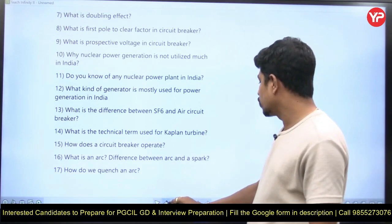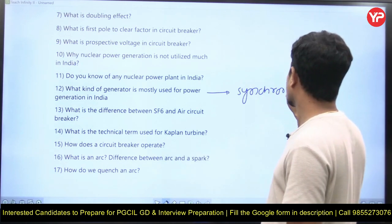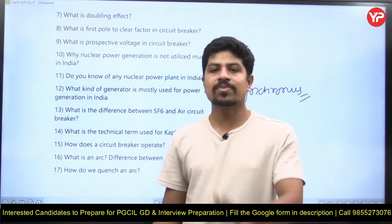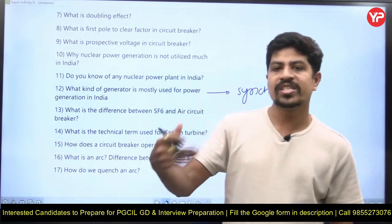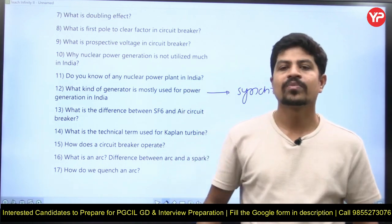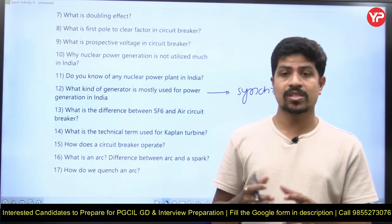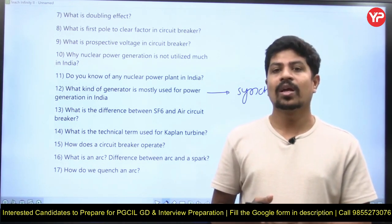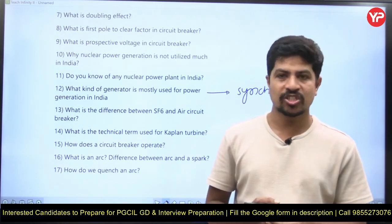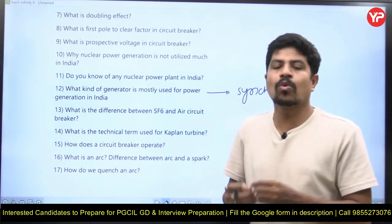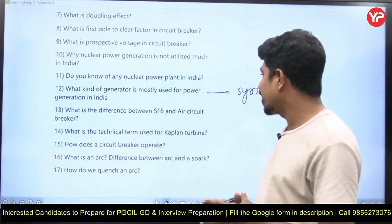Synchronous generators are mostly used for power generation in India because they are constant-speed generators and parallel operation is possible. We have three types: synchronous, induction, and DC generators. DC generators are not used for power generation at all. Between AC generators — induction generators are not constant-speed, so output frequency is not constant and parallel operation is not possible. In windmills or tidal energy, induction generators are used since wind speed is not constant. Synchronous generators are mostly used overall.